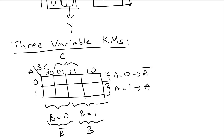Let's look at three-variable Karnaugh maps. In this K-map with three variables A, B, and C, the top row represents A equal to zero and the bottom row represents A equal to one. The left two columns are represented by B-not and the right two columns are represented by B. Similarly, the middle columns are represented by variable C and the outer two columns are represented by C-not.